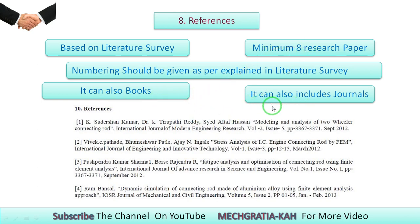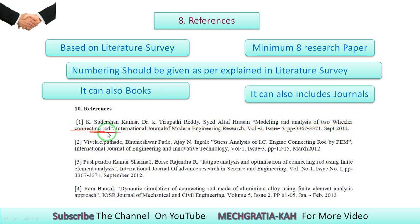References can include books and journals. The pattern for references is: first the author's name, then the title, then the journal name — for example, 'International Journal of Modern Engineering' — then which volume it was published in, which issue, which number, and which year. All complete information should be given.